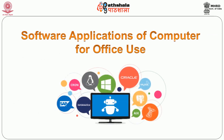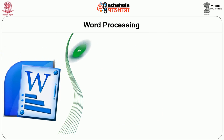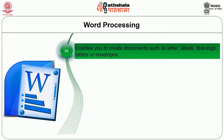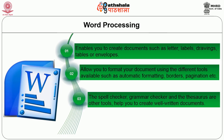Software applications of a computer for office use include word processing. Word processing is a very effective application that enables you to create documents such as letters, labels, drawings, tables, or envelopes. It also allows you to format your document using different tools such as automatic formatting, borders, pagination, etc. The spell checker, grammar checker, and thesaurus are other tools which help you to create well-written documents.